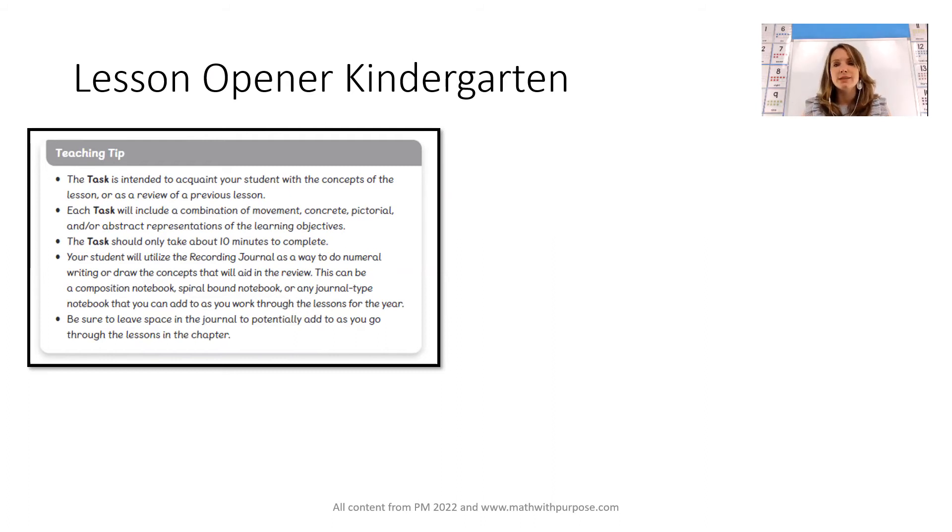This does not have to be anything major. This could be a composition book. It could be a couple of sheets of paper stapled together, but just somewhere for your student to journal. Now this is recommended in kindergarten. However, grades one through five would probably benefit from a journal as a place to record journal entries or just even some drawings or work as well. So keep that in mind.